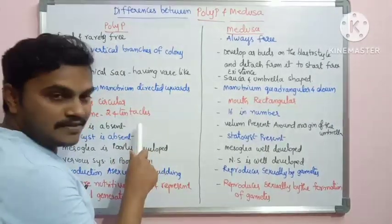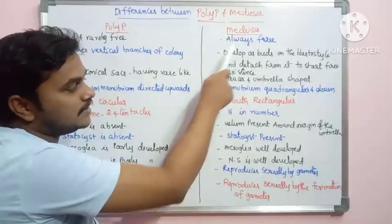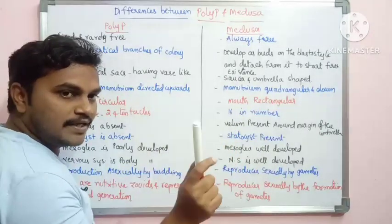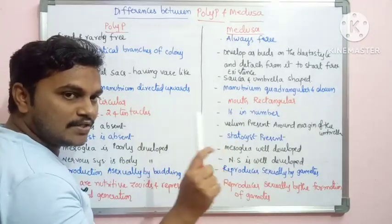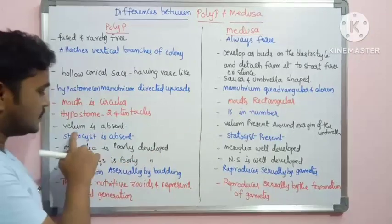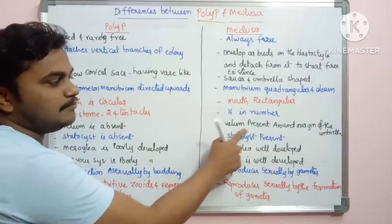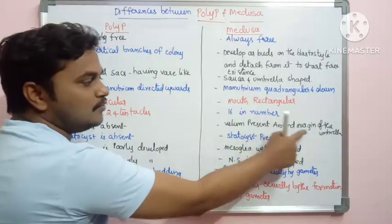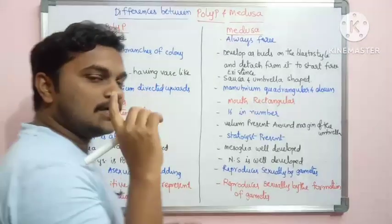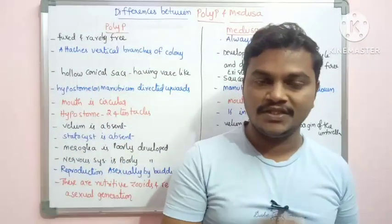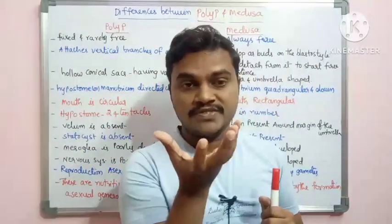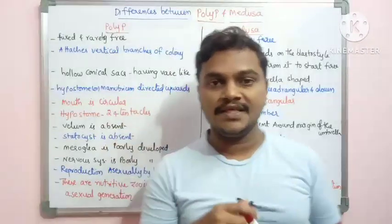In medusa, the tentacles are 16 in number. Medusa has an umbrella shape with an umbrella margin. Velum is absent in the polyp but velum is present around the margin of the umbrella in the medusa as a supporting structure.